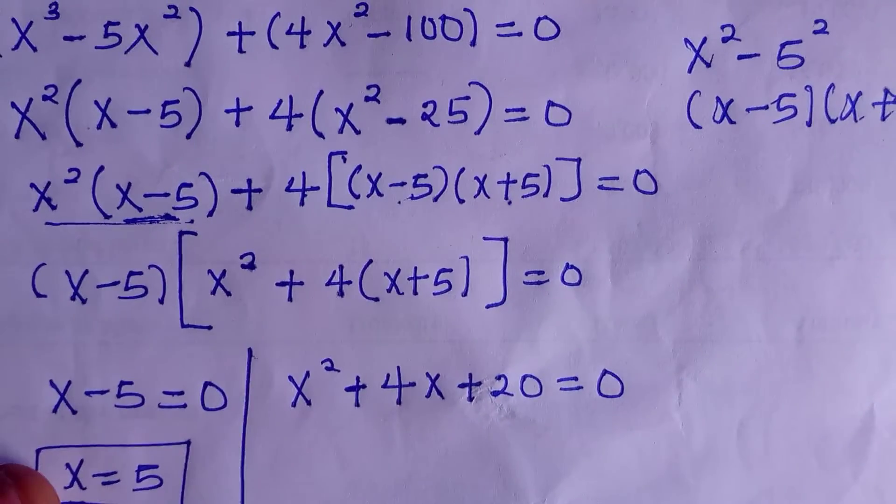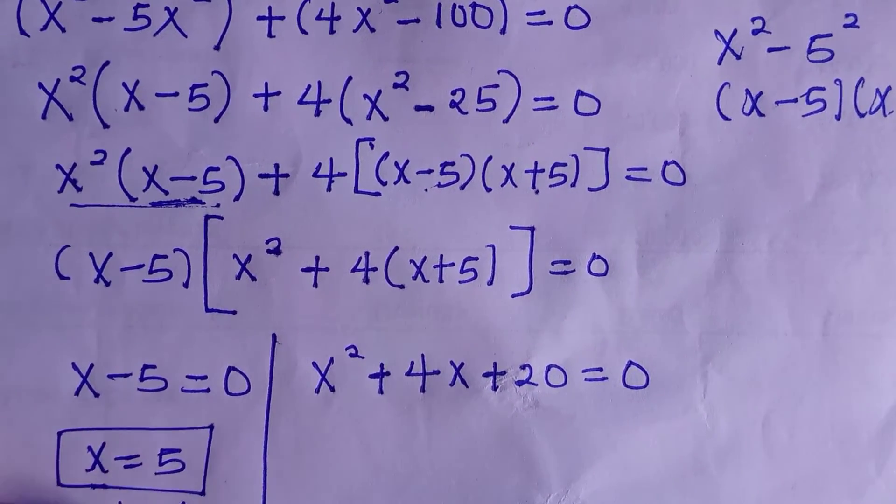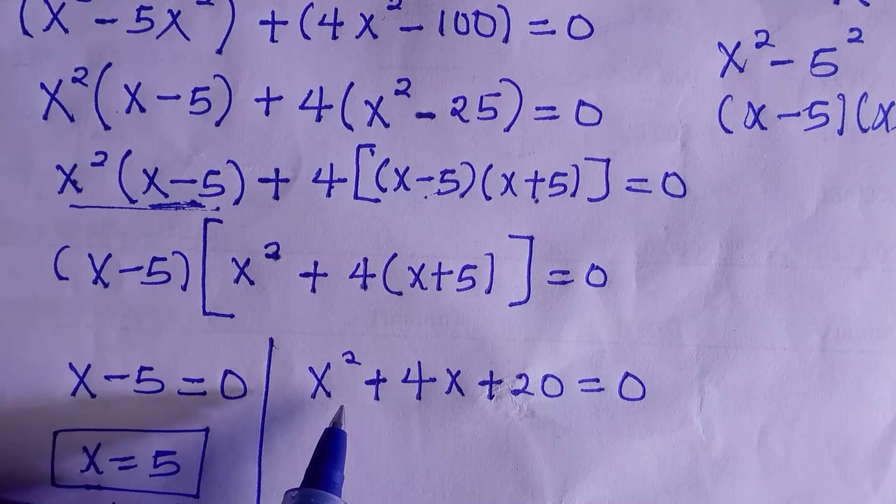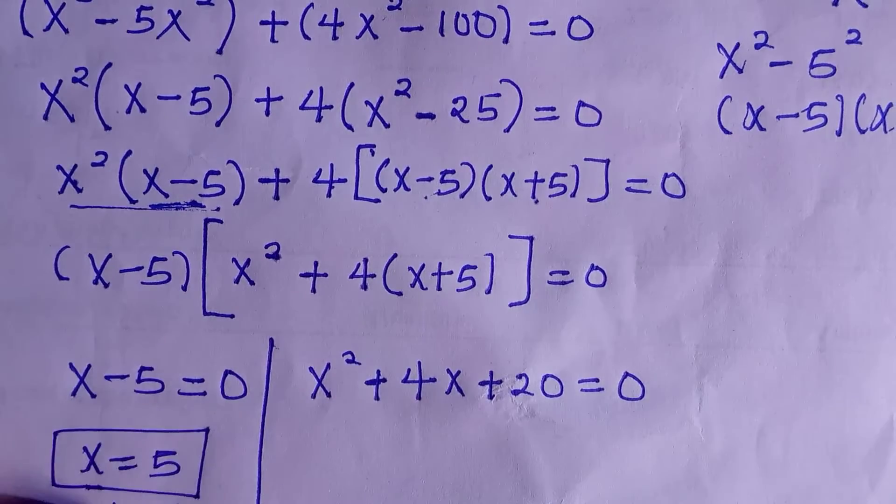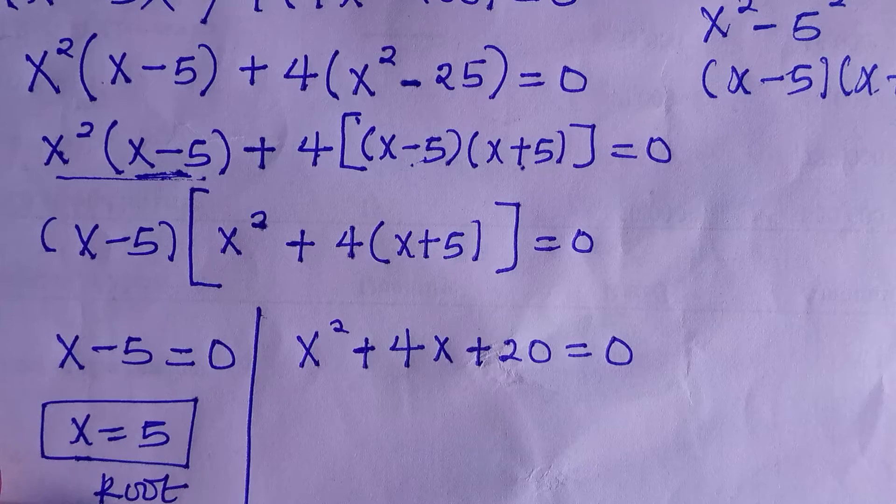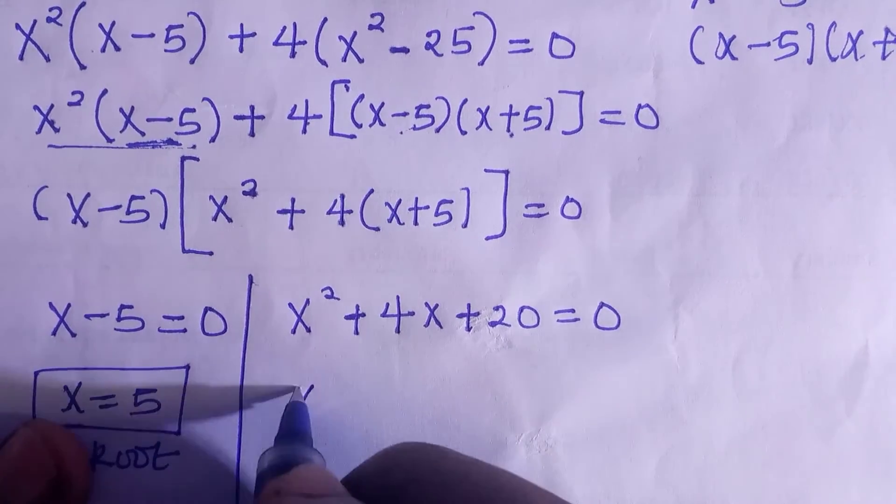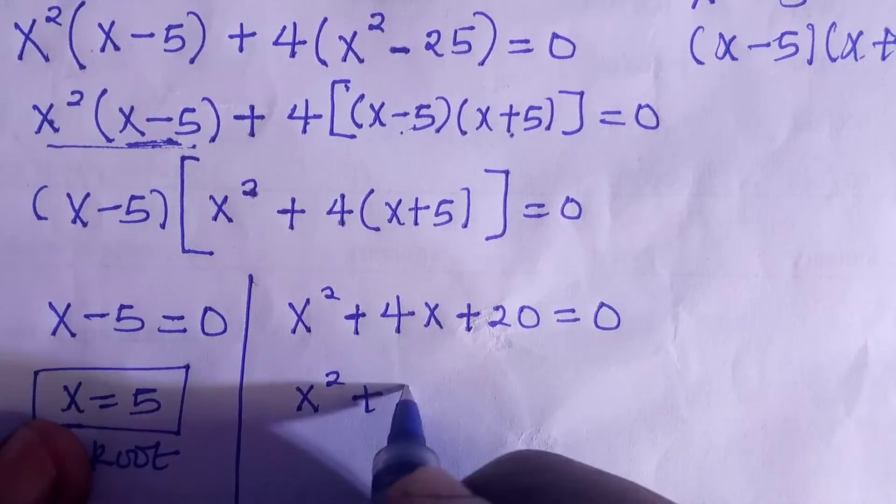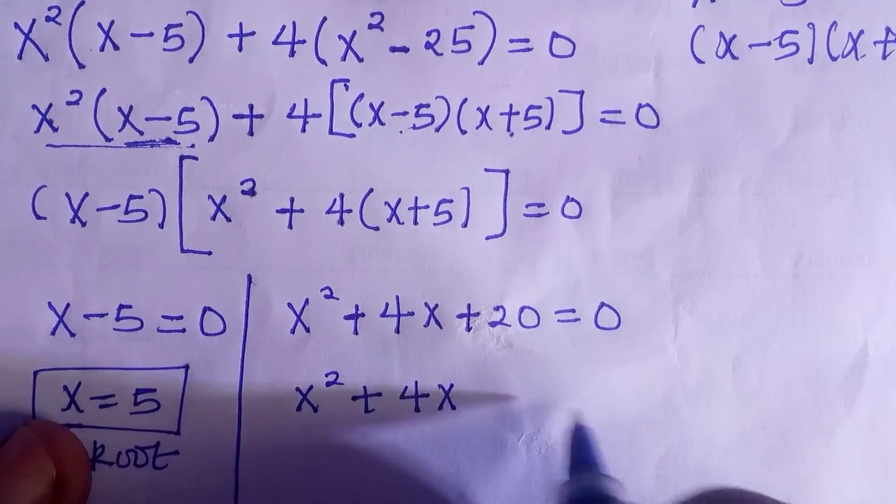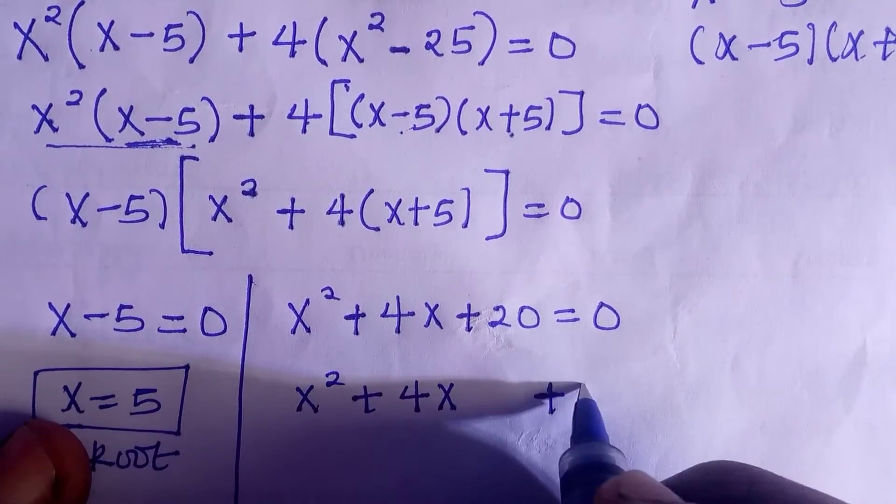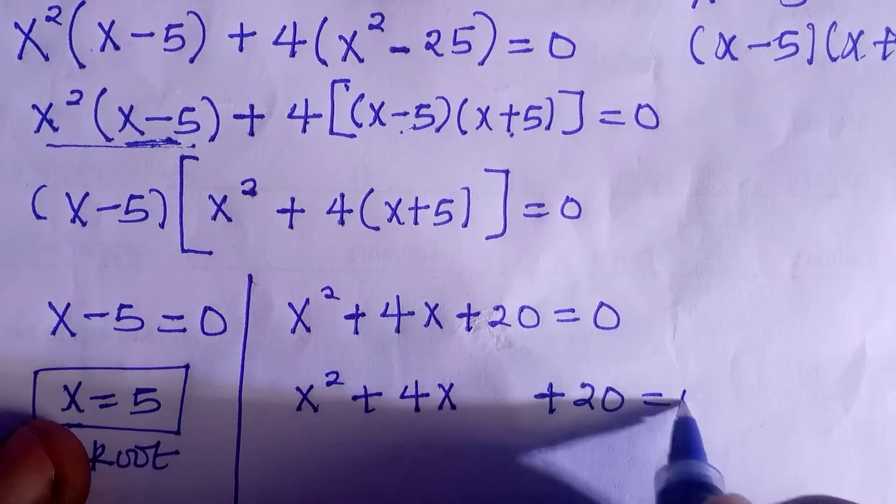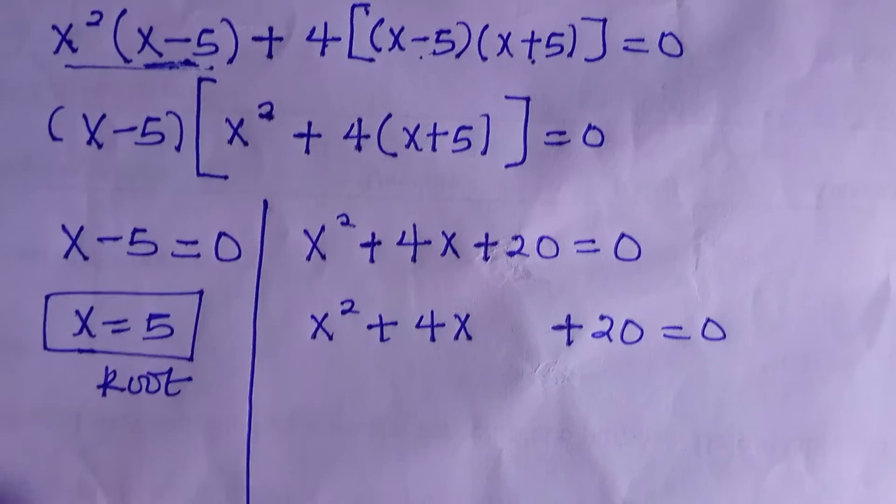For the second one, not all the time we'll be using a quadratic formula or factorization method. We cannot factorize this. So here I'm going to use the other method called completing the square method. So hereby if you have x raised to power 2 plus 4x and I separate this 20 away from it, everything equals to 0.